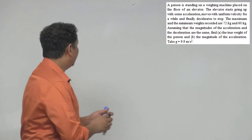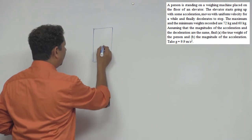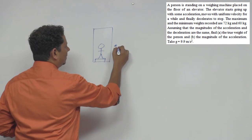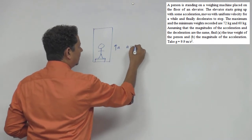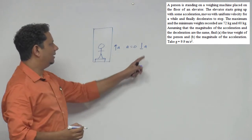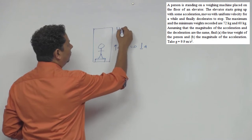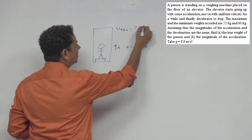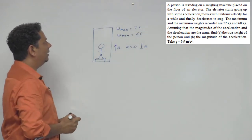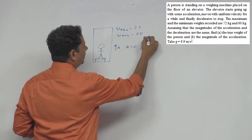The scenario is: a person is standing in a lift on a weighing machine. First, the lift goes up with acceleration a, then acceleration becomes 0 (uniform velocity), and then it comes down with acceleration a (deceleration). In this case, the maximum weight recorded is w_max = 72 kg and the minimum weight is w_min = 60 kg. The value of g given is 9.9 m/s².